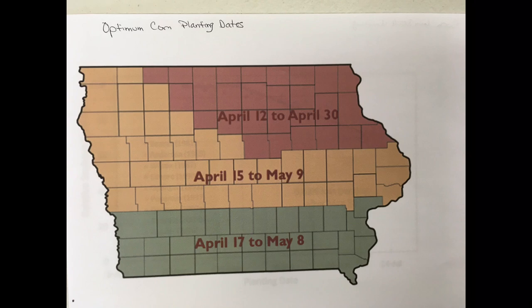Northwest to central Iowa to east central Iowa: April 15th to May 9th. And then you get that bottom tier of Iowa: April 17th to May 8th. Now I know it seems a little bit backwards — you would think that the further north you go, the later you would get those optimum planting dates. But the reason why you have a shorter window in northeast Iowa is because if we plant late in northeast Iowa, that hurts us more than it does in east central or southern Iowa, because we don't accumulate as many GDUs through the season. So we can't make up for late planting like they do further south. Getting it planted in a good time is more important the further north you go.